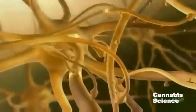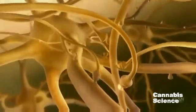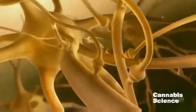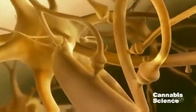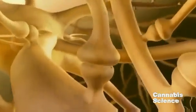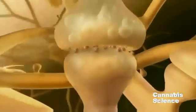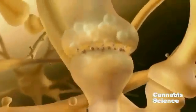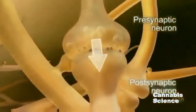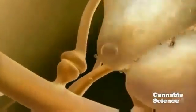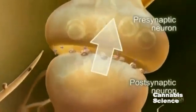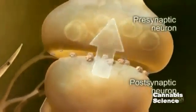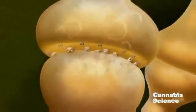Within the brain, CB1 receptors are among the most abundant G-protein-coupled receptors. However, in contrast to classical signaling, where information travels from pre- to post-synaptic neurons, the ECS uses retrograde signaling, where information travels from post- to pre-synaptic neuron. Let's take a closer look at this mechanism using a glutamatergic neuron model.